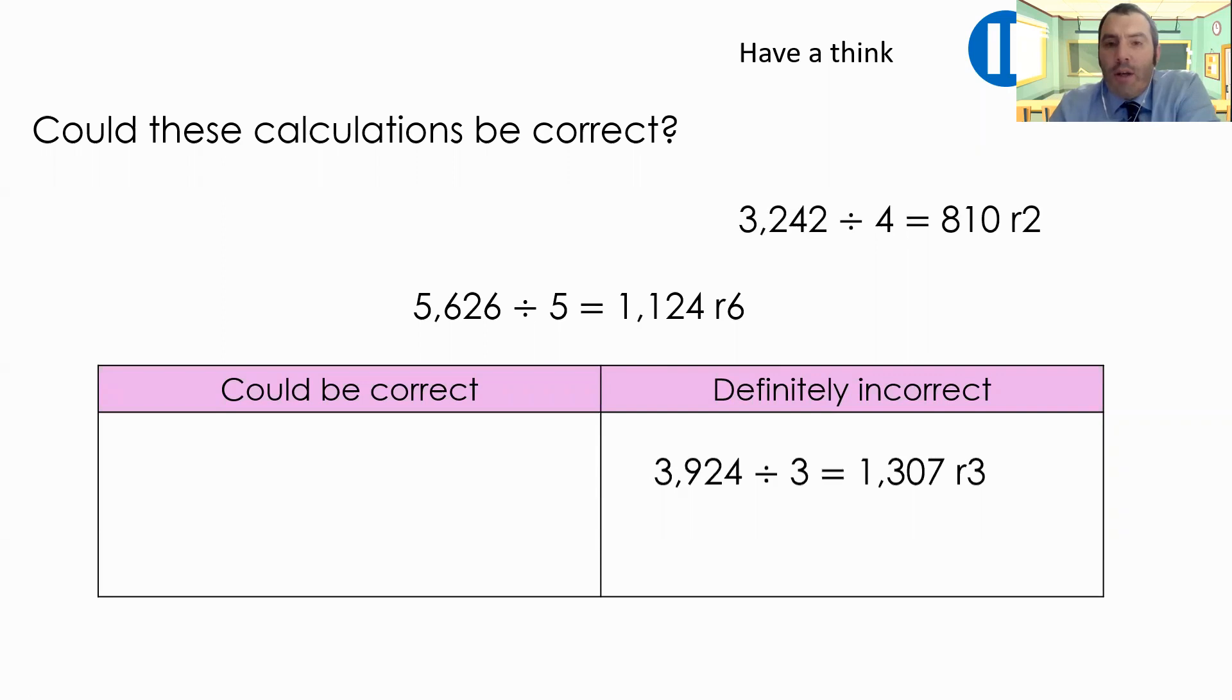Our second question, 3,242 divided by four. Again, I'm just going to look at the remainder and the divisor. I've got a remainder of two and my divisor is four. It could be correct. So I'm going to put that in the could be correct box.